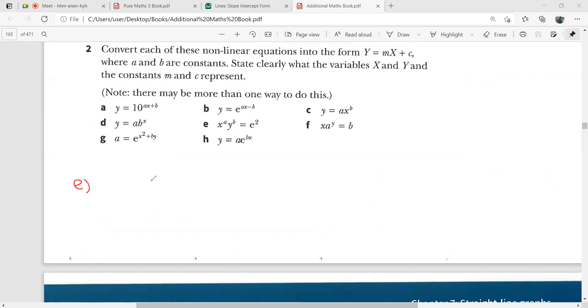So in this part e, I apply the log on both sides. ln x to the power a times y to the power b equals ln e squared. So this goes as ln x to the power a plus ln y to the power b, that is equal to 2 ln e.